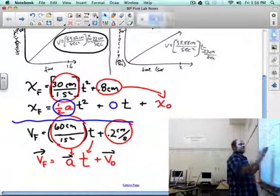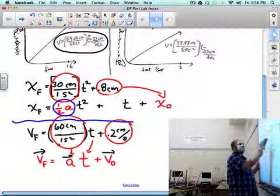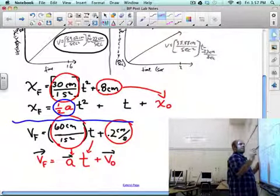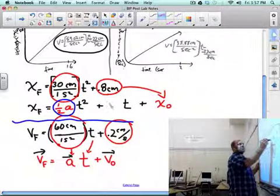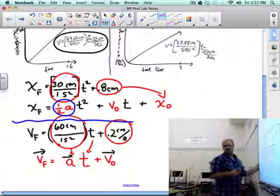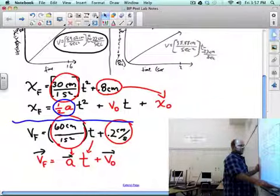And this term here that's really small, what's missing is actually v naught, and we did try to make our initial velocity 0.